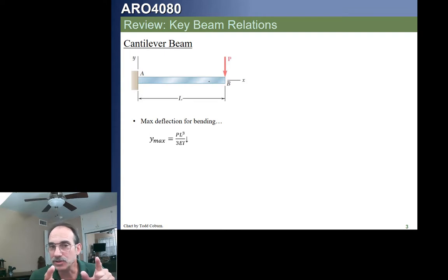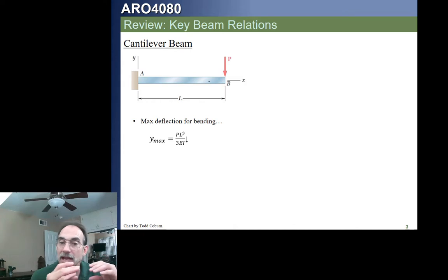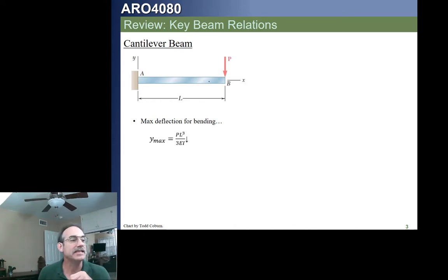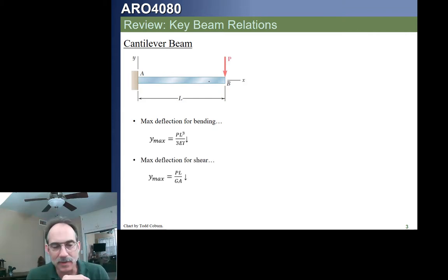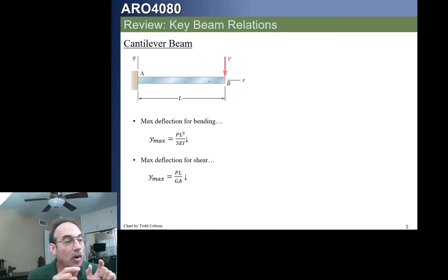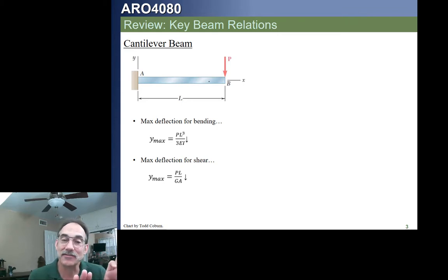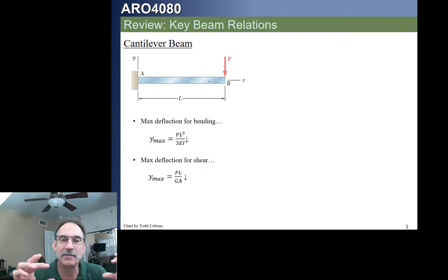We also saw, probably for the first time, that we get a shear deformation just like when we have a short little shear element, and that is given by this equation. Depending on the cross-sectional shape and things, this number can be tweaked slightly. But basically, we normally neglect the second part of the deflection which adds to the deflection due to shear deformation, because the longer the beam is, the less significant that is.